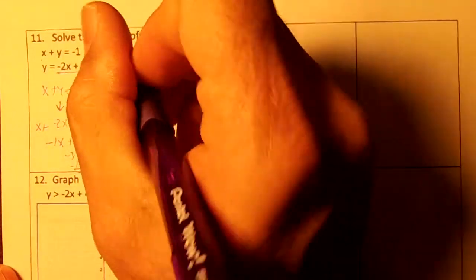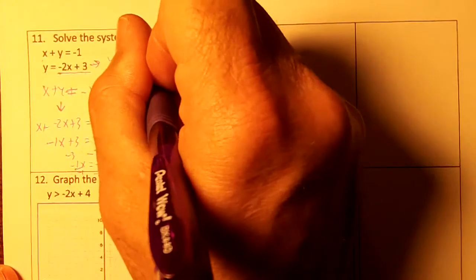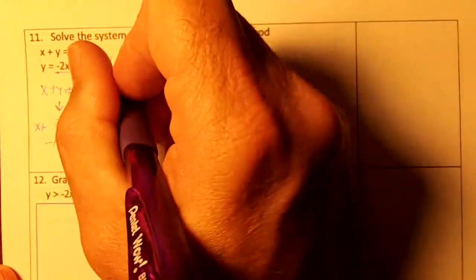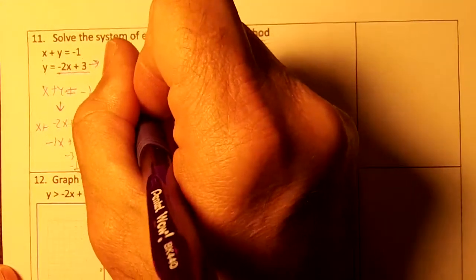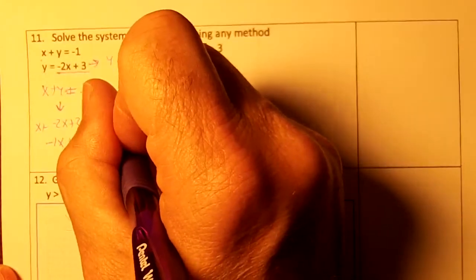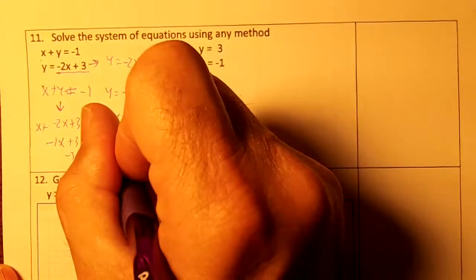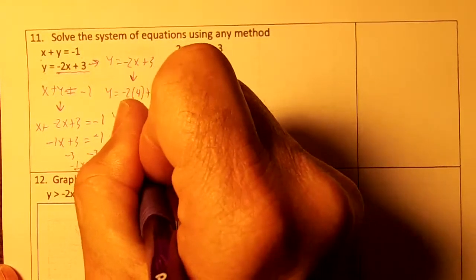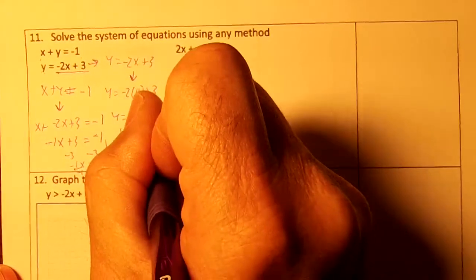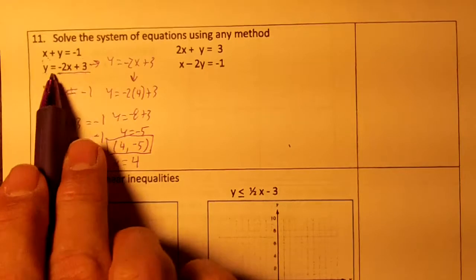Now I'm going to rewrite this equation, y equals negative 2x plus 3, and I'm going to replace x with 4. So y would equal negative 2 times 4 plus 3. Y would equal negative 8 plus 3, so y equals negative 5. My intersection point would be 4 comma negative 5. Use your calculator to check them out. If you put 4, negative 5 in here, they work in both equations. This is the solution for the intersection point of the two lines.